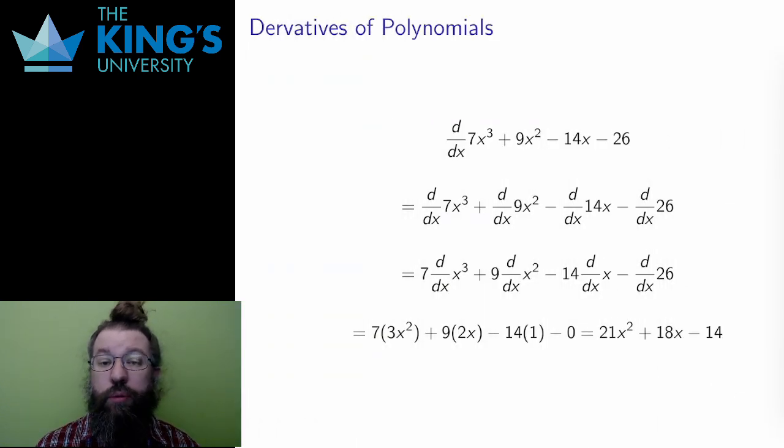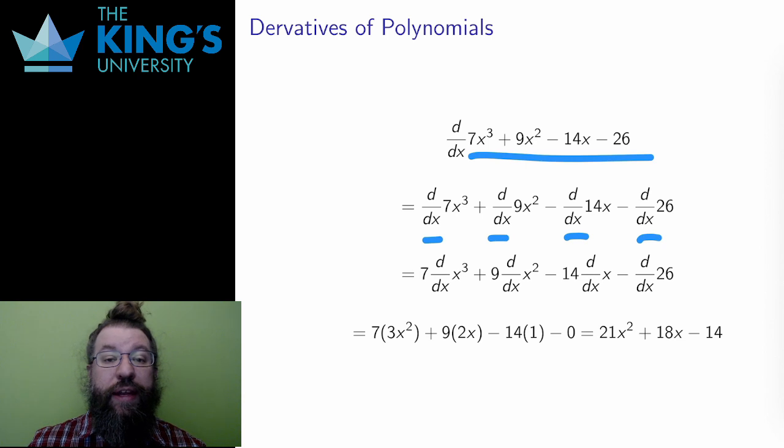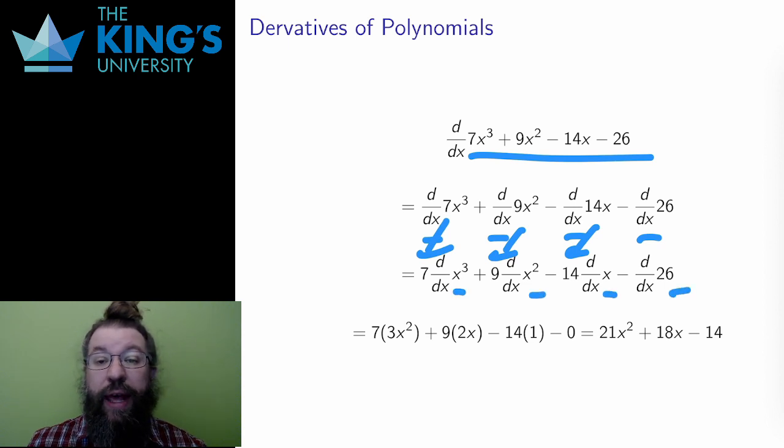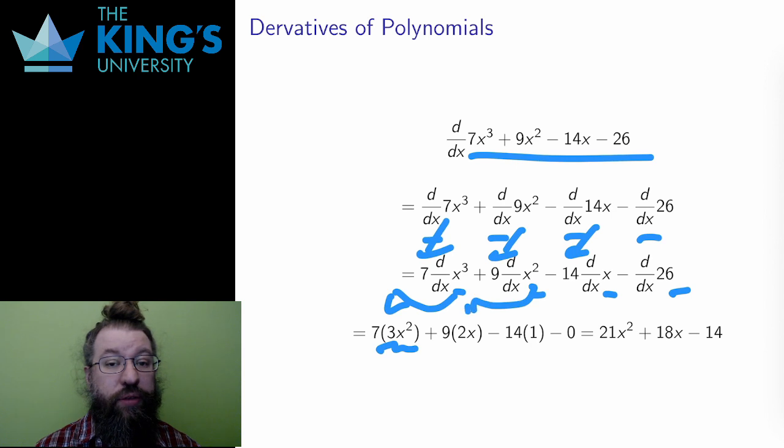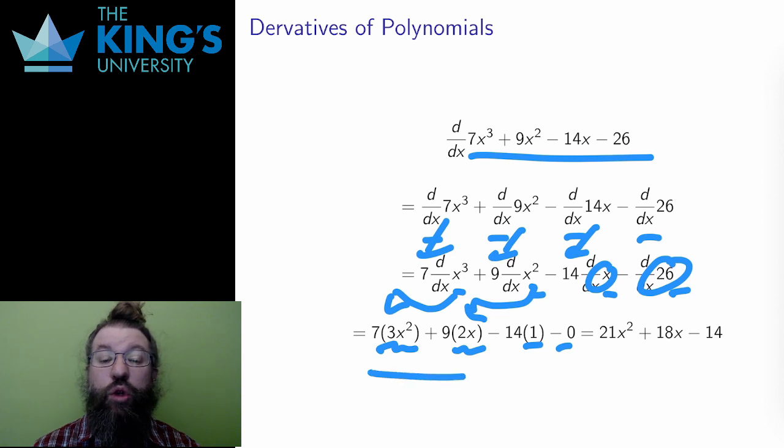Let me do one more polynomial example. Here is a degree 3 polynomial. I'll start with linearity, pulling this apart into four derivatives. Then I'll pull out the constants 7, 9, and 14. The resulting derivatives are all power rule derivatives or known derivatives. x cubed becomes 3x squared. The old exponent comes down in front, and the new exponent is 1 less. x squared becomes 2x. Derivative of x is 1. And the derivative of a constant is 0. Simplifying, I get the quadratic 21x squared plus 18x minus 14. This quadratic measures the slope of the original cubic at all of its points.